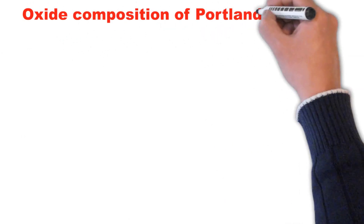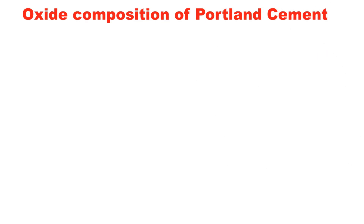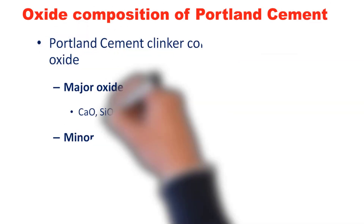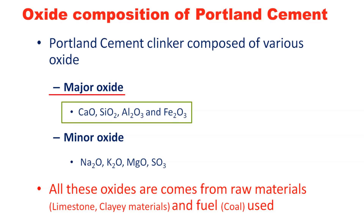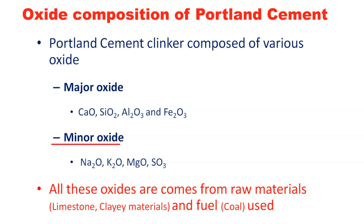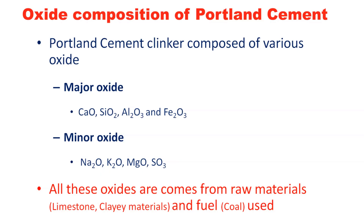The Portland cement clinker is composed of various oxides. Based on chemical analysis, these oxides can be categorized into two types: major oxides and minor oxides. The major oxides are calcium oxide, silicon oxide, aluminum oxide, and iron oxide. The minor oxides are alkali-bearing compounds like sodium oxide, potassium oxide, magnesium oxide, and sulfur oxide.